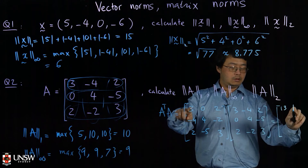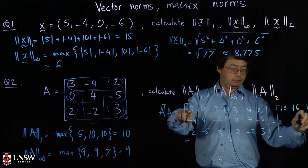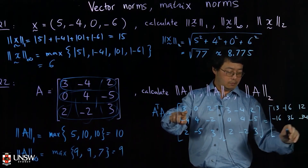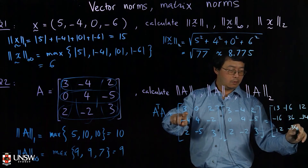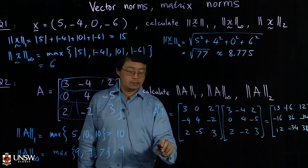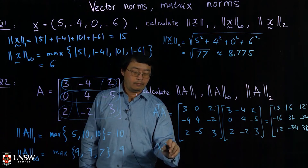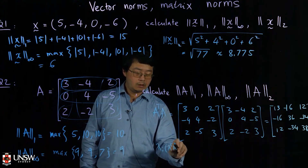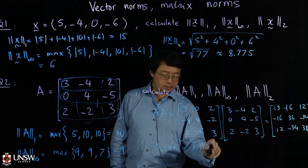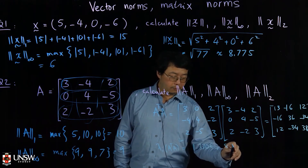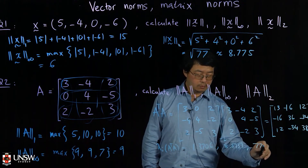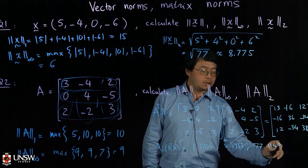Applying the matrix multiplication, you get A^T A = [13, 6, -16; 12, -16, 36; -34, 12, -34; 38]. The second step is to find the eigenvalues of A^T A, which are 1.3706, 8.5151, and 77.1143. Finding the eigenvalues is a bit complicated — you can use MATLAB.